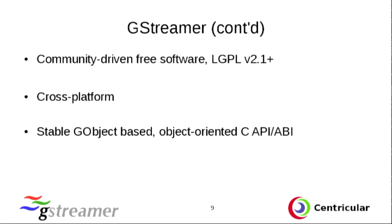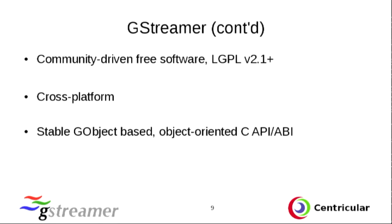GStreamer is a community-driven free software project with quite a big community of contributors — last year about 235 people contributing code, plus more doing documentation, testing, and similar work. It's all LGPL licensed, which allows proprietary applications and proprietary plug-ins. It's also cross-platform — we run almost everywhere you have a C compiler and a normal operating system: Linux, embedded Linux, Windows, OS X, all the BSDs, Android, and iOS. So you can use it for your Android application or something bigger.